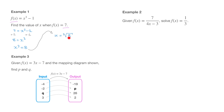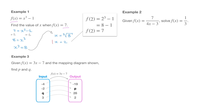Luckily, the cube root of 8 can be found without a calculator. We need to ask ourselves which number do we have to multiply by itself 3 times to get 8. The answer is 2 — indeed, 2 times 2 times 2 equals 8, so the cube root of 8 is equal to 2. We've just found which input value leads us to the output value 7.